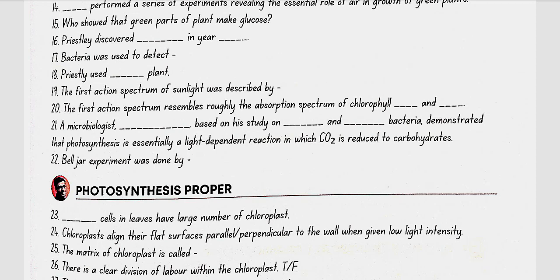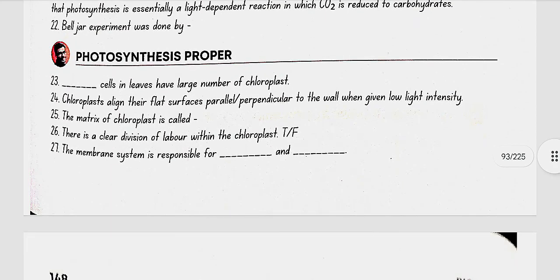The Belger experiment was done by Priestley. Mesophyll cells in leaves have a large number of chloroplasts. Chloroplasts align their flat surfaces parallel to the wall when given low light intensity, and perpendicular when given high light intensity. The matrix of the chloroplast is called stroma.